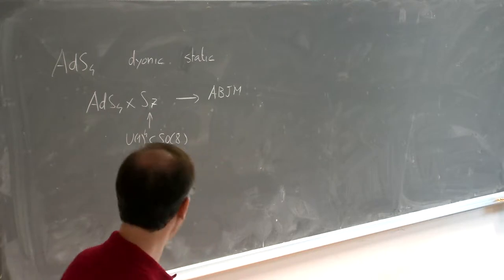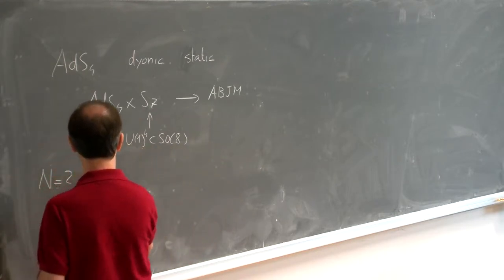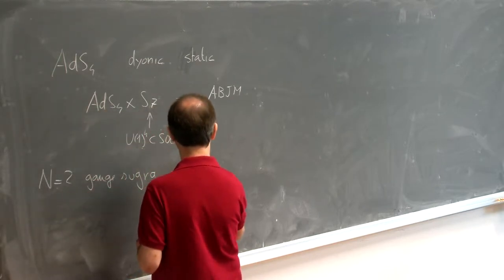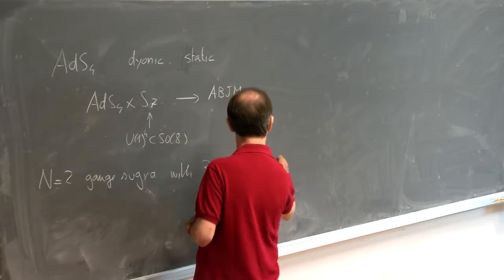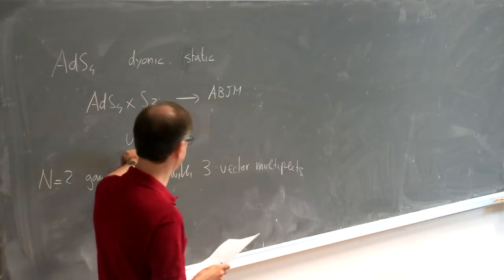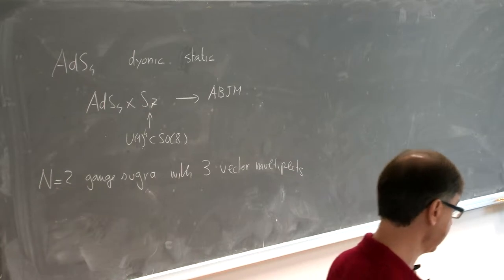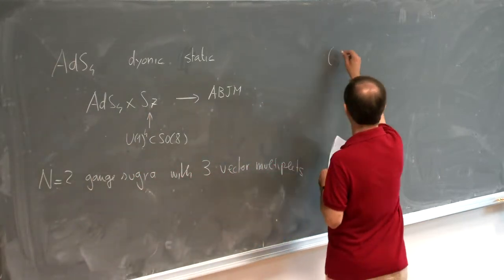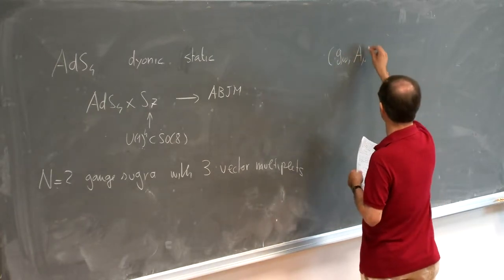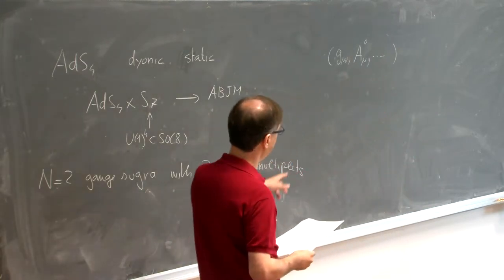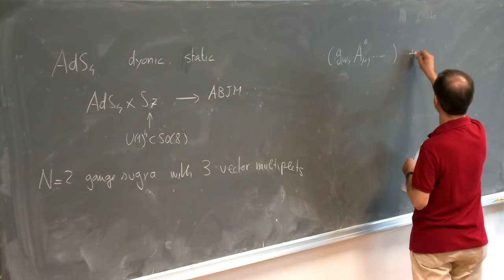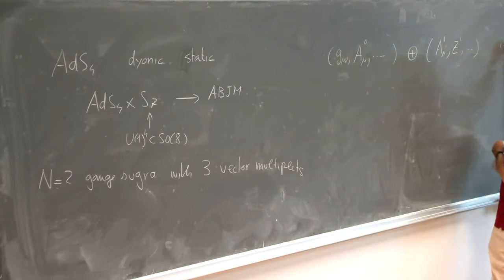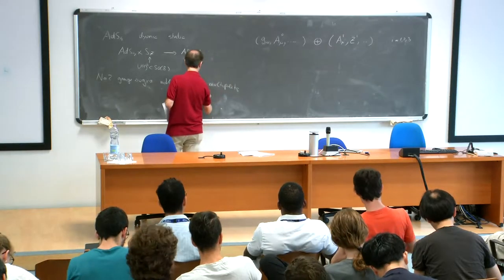I need four vectors. The dimensional reduction gives you an N=2 gauge supergravity with three vector multiplets — why three and not four? Because in the gravity multiplet of N=2 supergravity there is already a vector. The matter content can be summarized as: a gravity multiplet that contains the metric and the gravity photon, and then three vector multiplets, each containing a vector field, scalars, and fermions. So NV, the number of vector multiplets, is three.